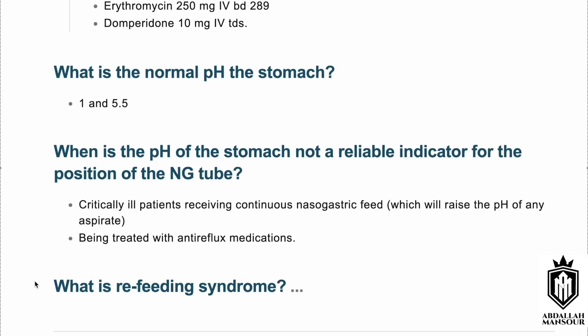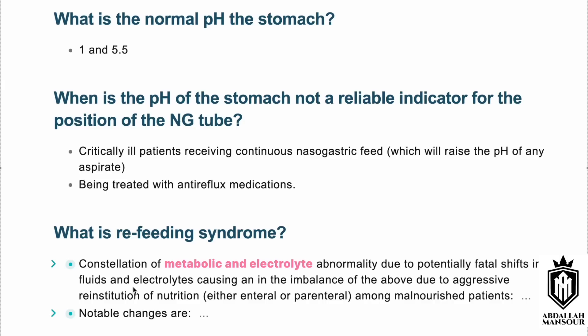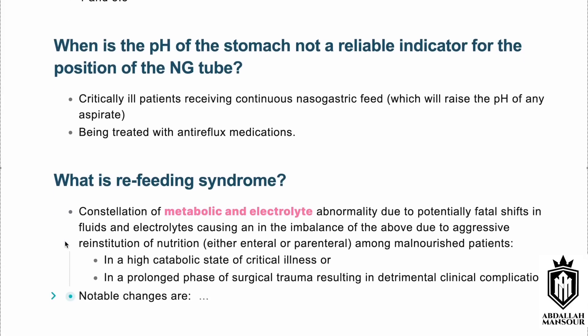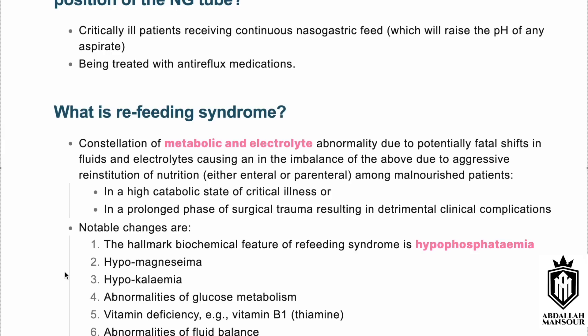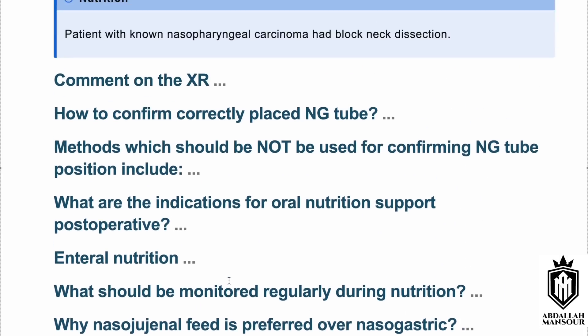Refeeding syndrome is a constellation of metabolic and electrolyte abnormalities due to potentially fatal shifts of fluid and electrolyte, causing imbalance when nutrition is reintroduced after a prolonged period of starvation. It occurs in malnourished patients being resuscitated with enteral or parenteral nutrition, particularly those in a high catabolic state or recovering from major surgery. The hallmark is hypophosphatemia, and other features include hypomagnesemia, hypokalemia, glucose metabolism abnormalities, vitamin deficiencies, and fluid imbalance.